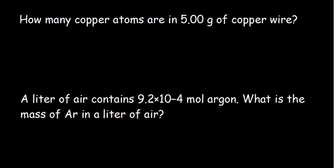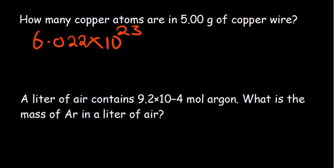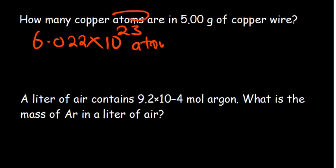Now let's look at how we determine the number of atoms and molecules. For example: how many copper atoms are in 5.00 grams of copper wire? Each time they want you to determine any number — atoms or molecules — we use what we call Avogadro's number. The units are per mole, so if we are dealing with atoms the units are atoms per mole, and if dealing with molecules it is molecules per mole.